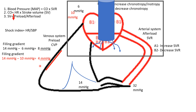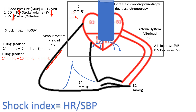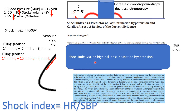We can identify patients who are preload-depleted because they typically compensate for lower stroke volumes by increasing their heart rate to maintain cardiac output. We can use this to calculate the shock index: patients with a heart rate divided by systolic blood pressure greater than 0.9 are high risk for post-intubation hypotension. If you're tachycardic and hypotensive before intubation, you're not likely to improve after. These patients should have vasopressor support on standby and receive fluid resuscitation prior to intubation.